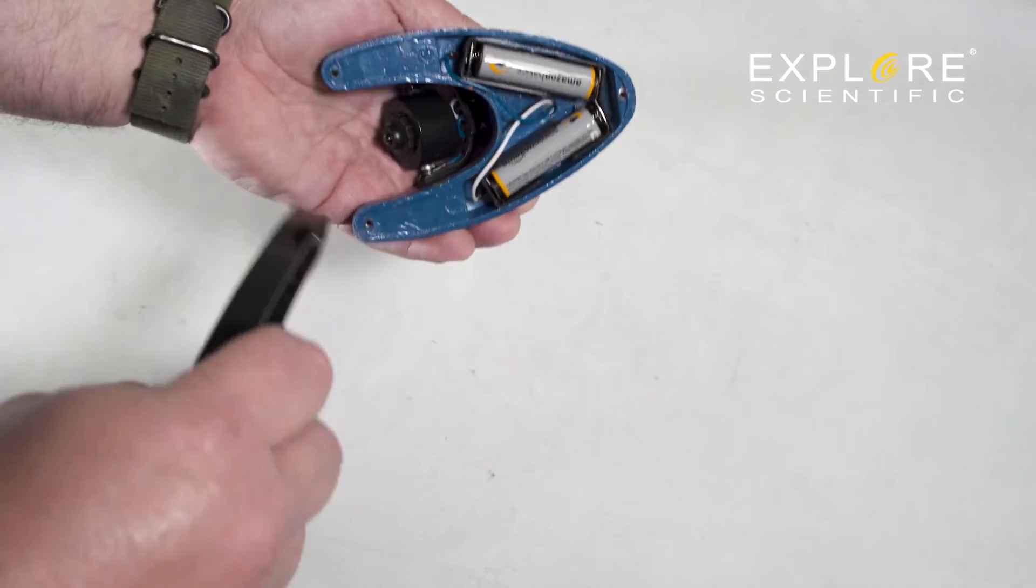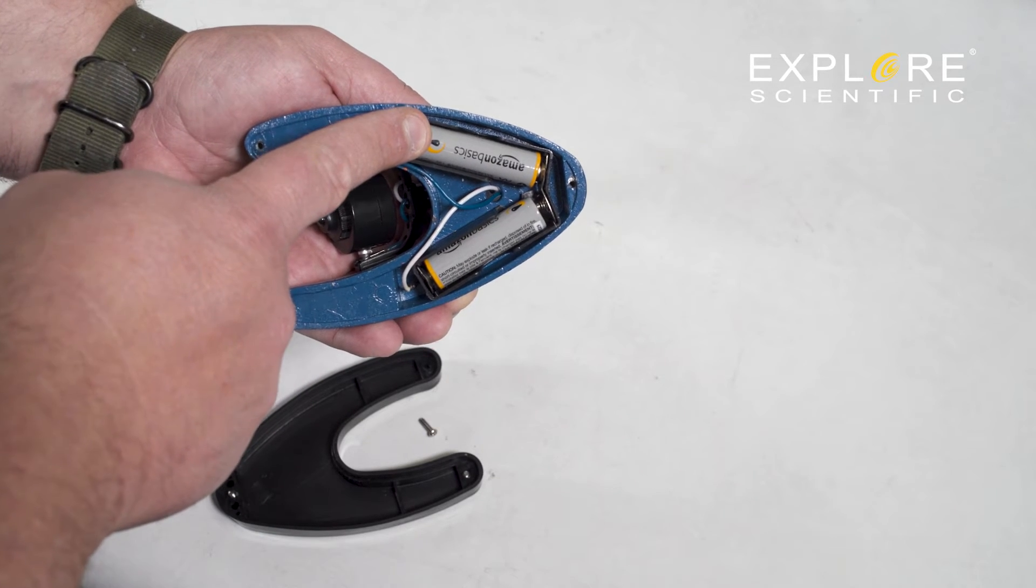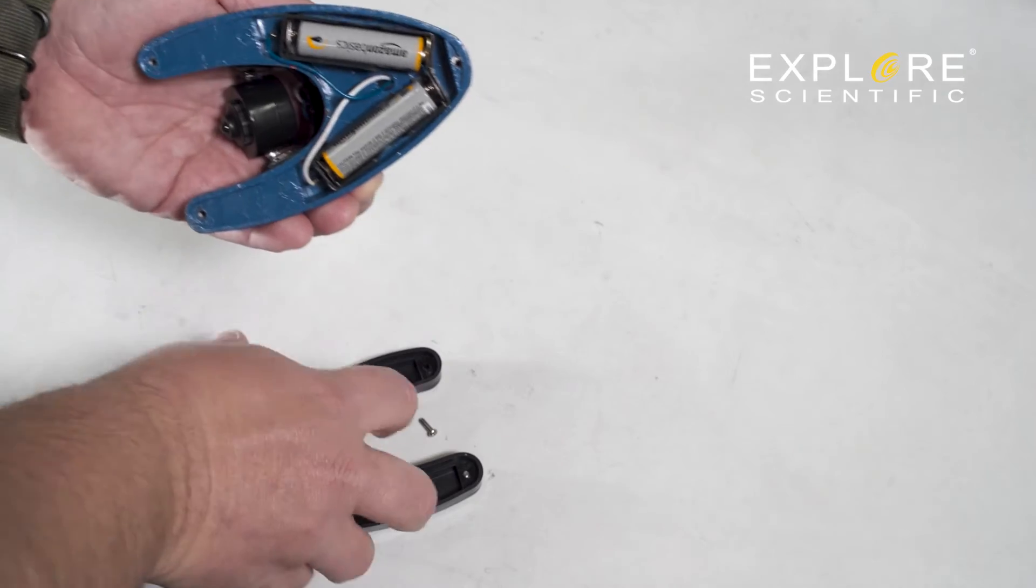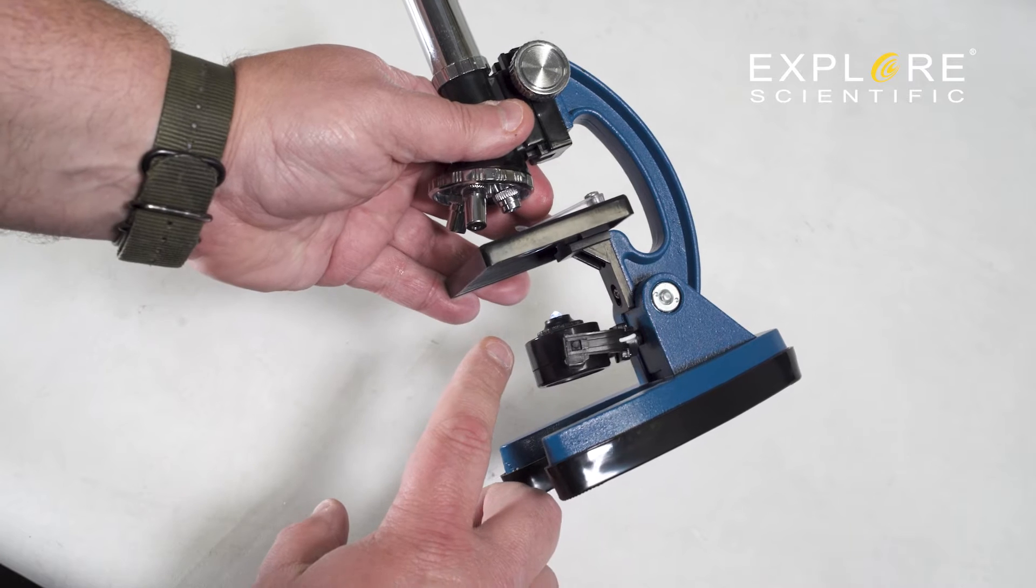This will expose the batteries and allow for easy replacement or installation. Once you have installed the batteries, replace the rubber base and screws. Do not over tighten the screws. You should be able to turn the mirror upside down and see that the light has turned on.